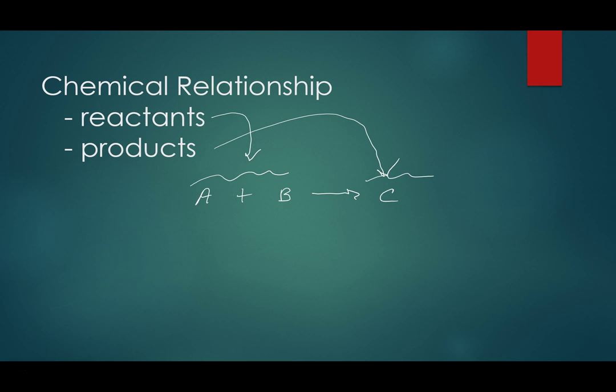The stoichiometric relationships in this reaction are all one-to-one. One molecule of A reacts with one molecule of B. One molecule of A produces one molecule of C. And one molecule of C is produced from one molecule of B.